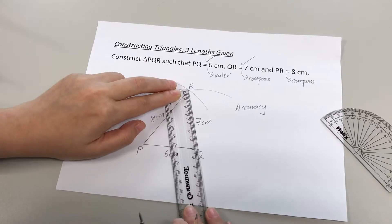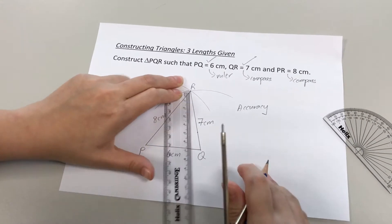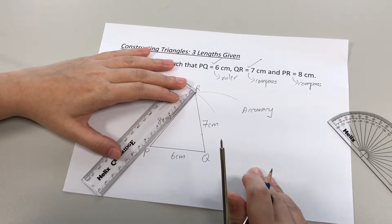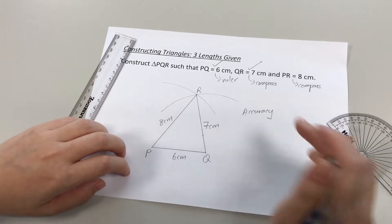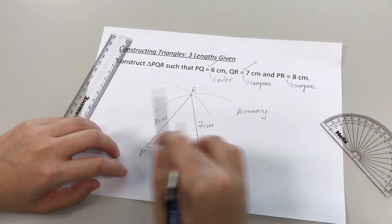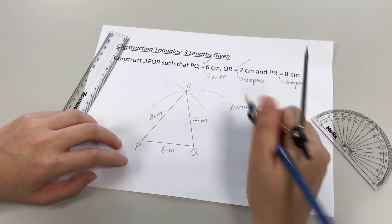This is 6 cm. Yes. Okay, this is supposed to be 7 cm. Okay, yep, 7 cm. And P, R is supposed to be 8. Okay, yes, and we have 8 cm. So that's what accuracy means that your lengths are drawn to the correct values given.